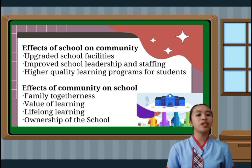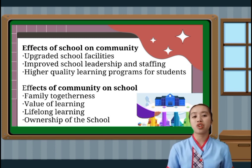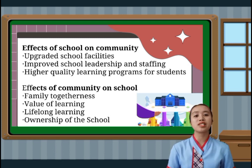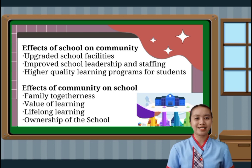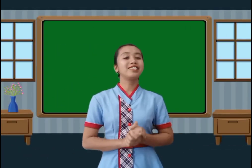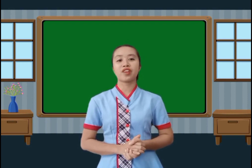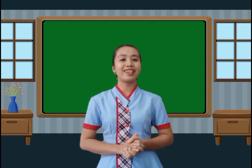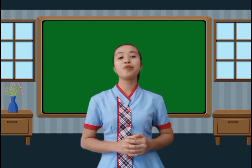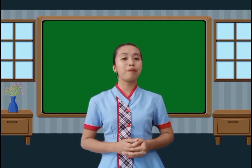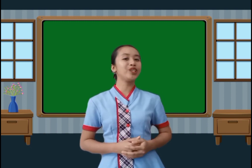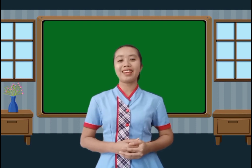Schools and communities are closely intertwined and have a significant impact on each other. By working together, schools and communities can create a more positive and supportive environment for students and help ensure that all students have the resources and support they need to succeed. Overall, adapting to the external environment in education requires a commitment to staying up-to-date on changes and trends and a willingness to embrace new approaches and ideas. By doing so, teachers and communities can help prepare students for success in a rapidly changing world. I hope you learned something from my discussion. Thank you and have a great day!